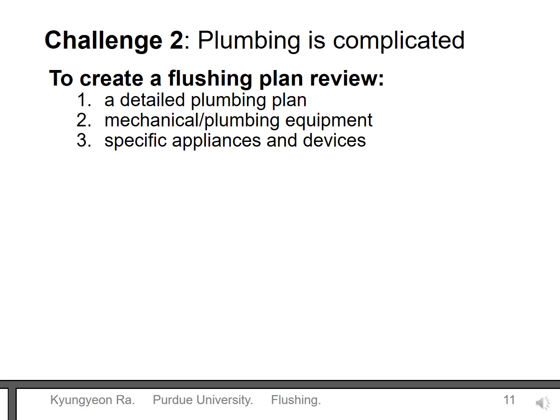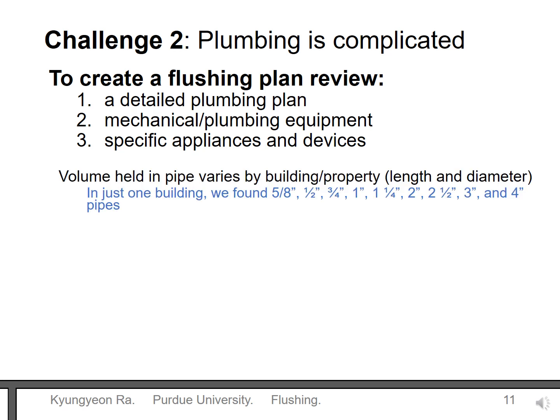Another challenge is that plumbing is not so simple. Even with just the simple animation you just saw, you learned that we need to really understand how the building water system is set up. A detailed plumbing diagram can be extremely helpful to create a flushing plan. You also need to know which mechanical and plumbing equipment exist in the building and where. These include devices such as softeners, heater tanks, and specific devices like ice machines and point-of-use devices like faucet or under-sink filters. In one building we found there were numerous pipes of different diameters even along the same water line. To flush completely, it is important to know how much volume you need to flush and how long flushing will take.